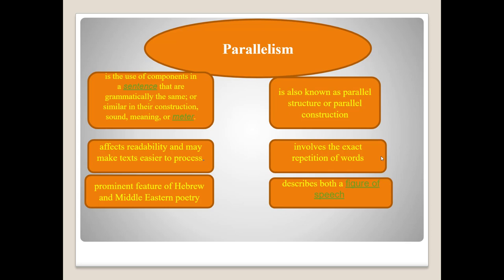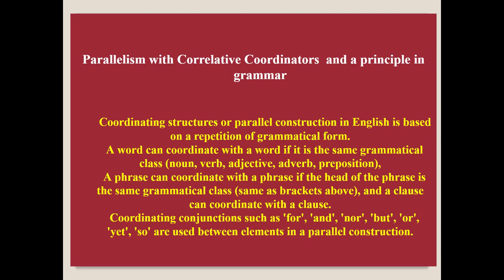Let's talk about parallelism. Parallelism is the use of components in a sentence that are grammatically the same or similar in their construction, sound, meaning, or meter. Examples are found in literary works as well as in ordinary conversations. Parallelism, also known as parallel structure or parallel construction, is a balance within one or more sentences of similar phrases or clauses that have the same grammatical structure. The application of parallelism affects readability and may make texts easier to process. Parallelism can be as simple as choosing grammatically similar elements when writing a list. In some cases, parallelism involves the exact repetition of words, but all that is required is a repetition of grammatical elements.